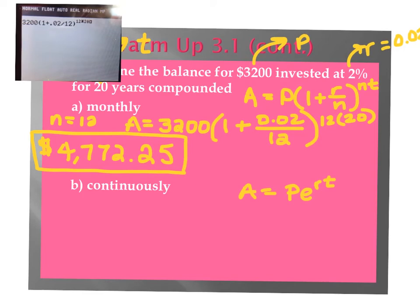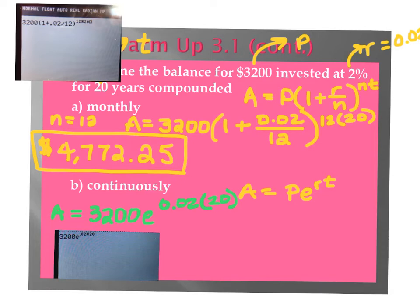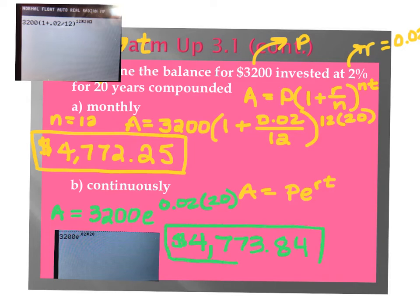Then B says continuously, so this is where the PERT formula comes into play. A will equal P, which was our principal balance $3,200, times E to the rate, which is 0.02, times T, the number of years, which is 20. Type that into the calculator: 3,200 times E to the 0.02 times 20. From that you get $4,773.84. And just like we spoke about, continuously should always earn more than what you earn either monthly, daily, or annually. You can see that it earns just slightly more because the rate is so low, but it does earn more.